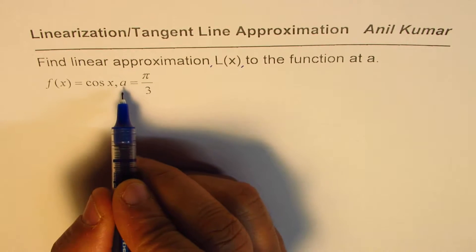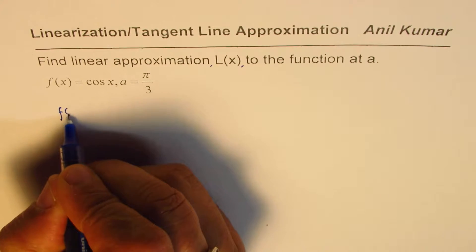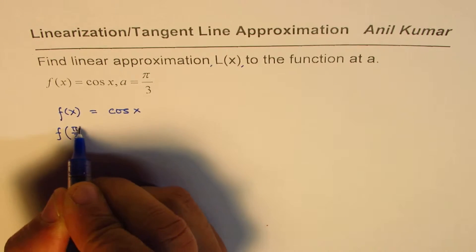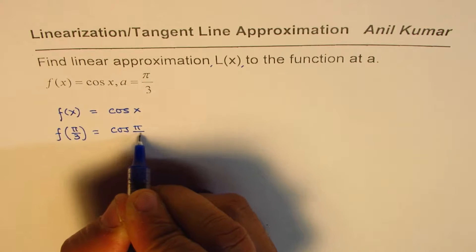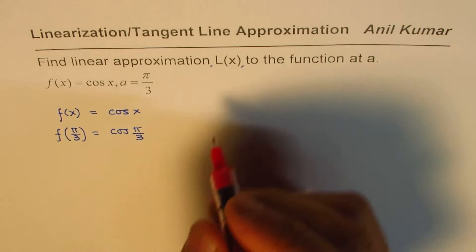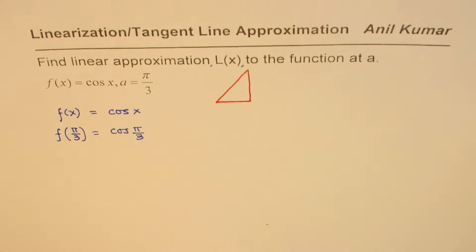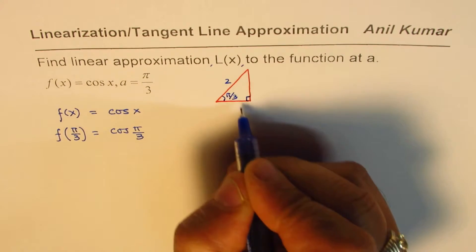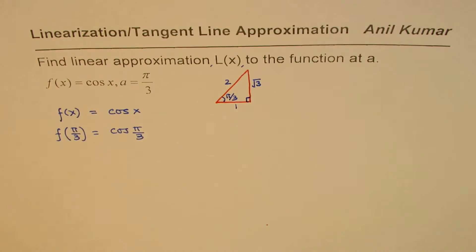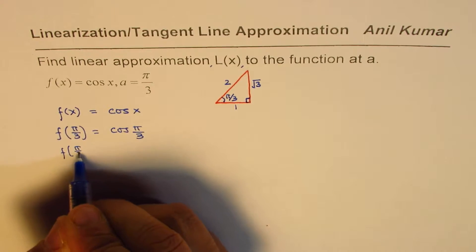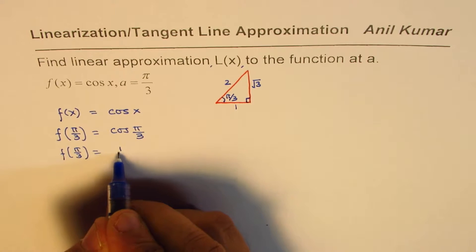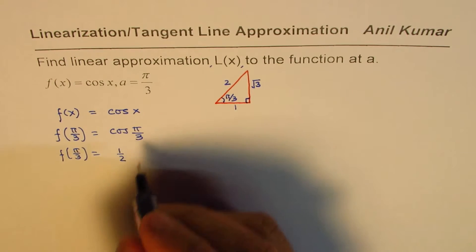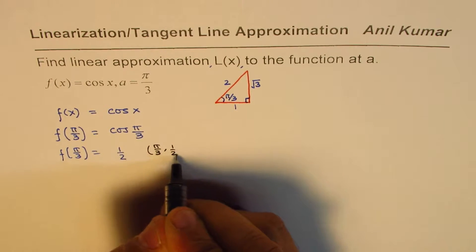The point given to us is a = π/3. So we have f(x) = cos(x). Let's find the value of this function at π/3 — that is the first step. So that is cos(π/3). You could use your calculator or special triangles. Using the special triangle for π/3, which has sides 2, 1, and √3, we get f(π/3) = cos(π/3) = 1/2. That gives us the coordinates of the point: (π/3, 1/2).